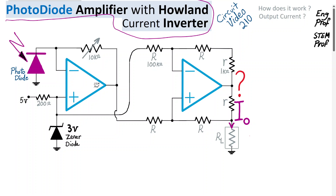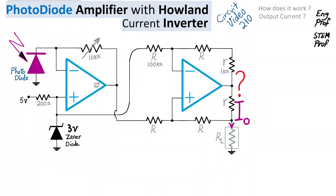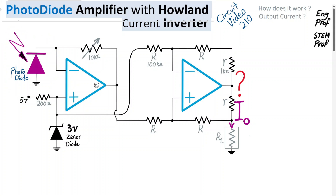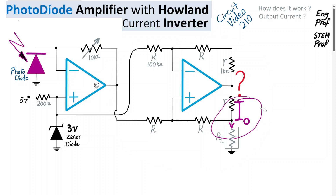A photodiode amplifier combined with a Howland current source current inverter is discussed in this circuit analysis example, which is the 210th video in the analog circuit playlist. As part of sensor signal conditioning, at the input of the circuit is a photodiode receiving optical energy. The first op-amp stage achieves two things, and the second stage is a Howland current source current inverter. We want to see how it works and compute the output current provided to a load resistor.